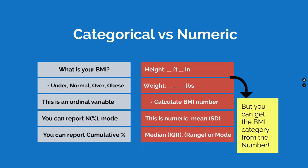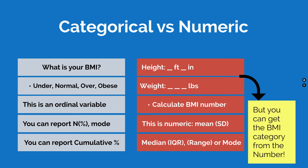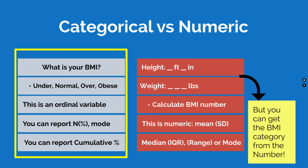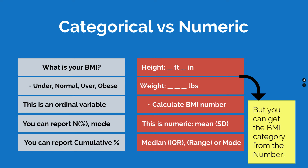Consider BMI — body mass index. There are four levels of BMI when reported categorically: underweight, normal weight, overweight, or obese. This is an ordinal variable — underweight has a lower BMI than normal weight, normal lower than overweight, overweight lower than obese. You can report the N and percent of each level, the mode as the most common level, and cumulative percent — for example, what percentage are underweight or normal weight, or what percent are obese versus not obese.